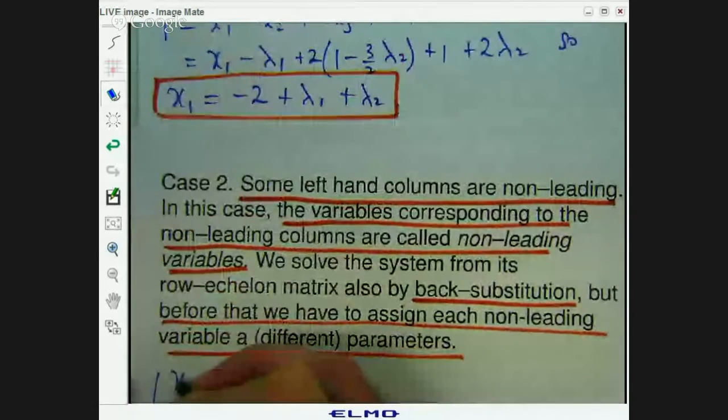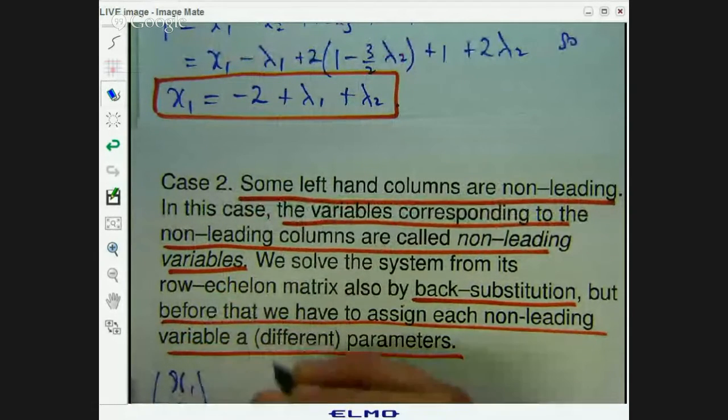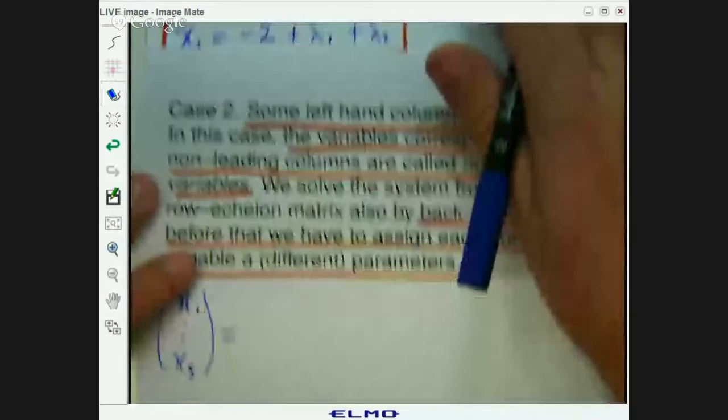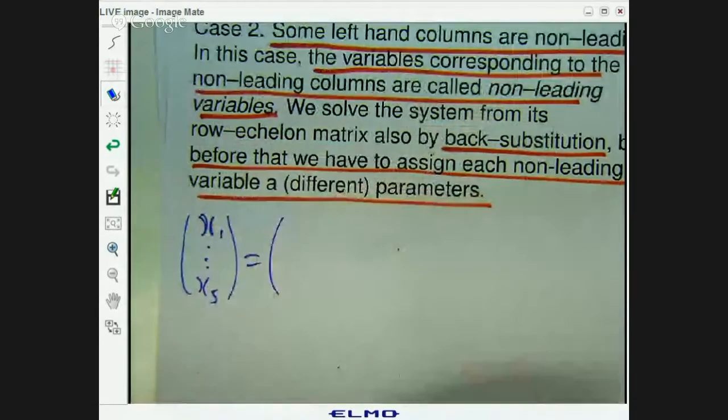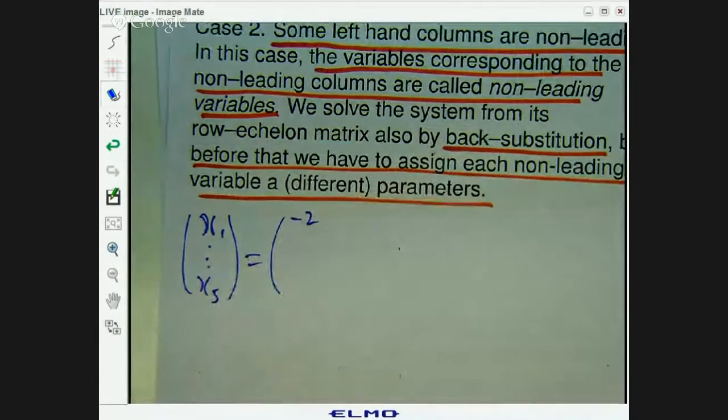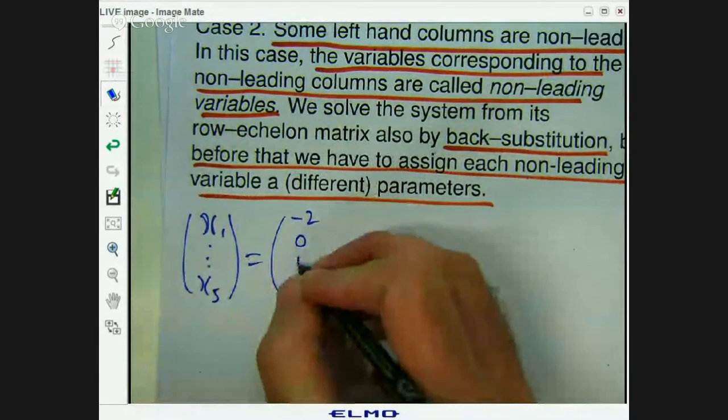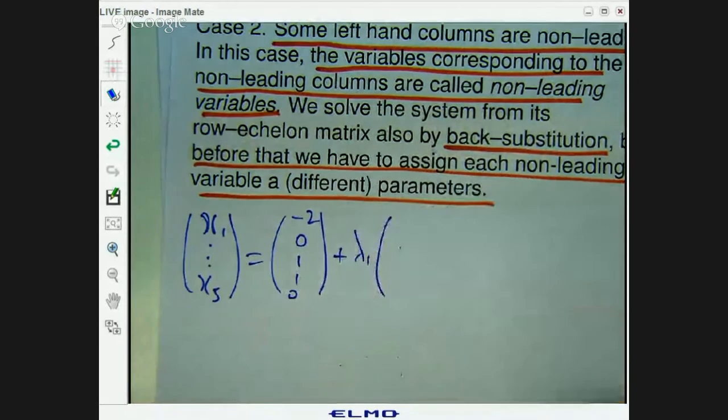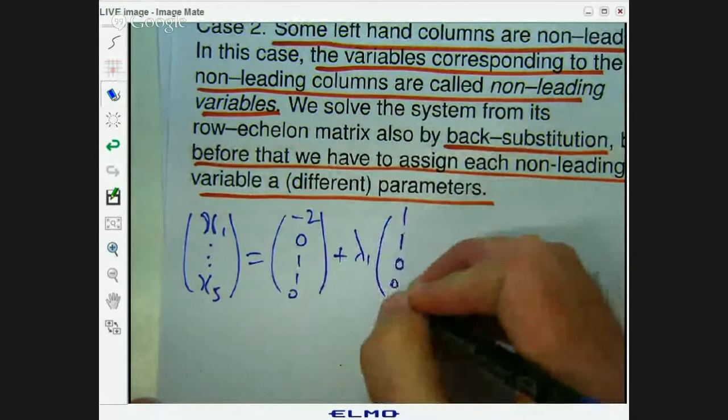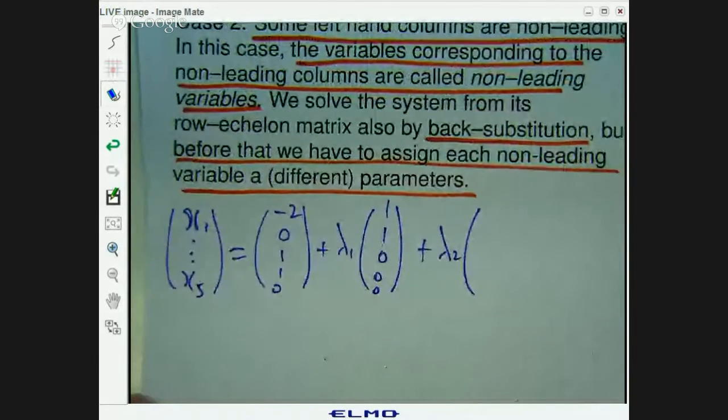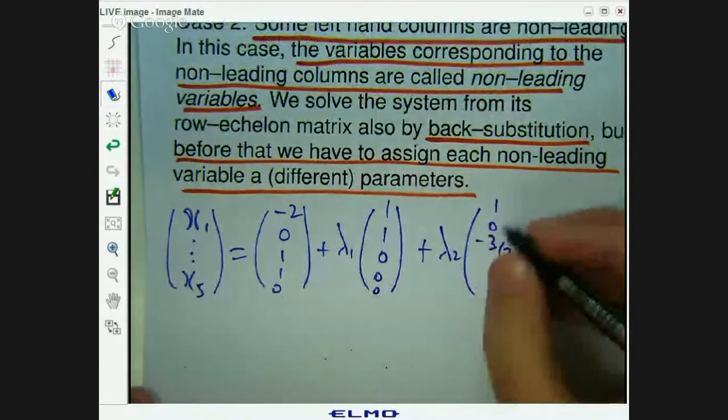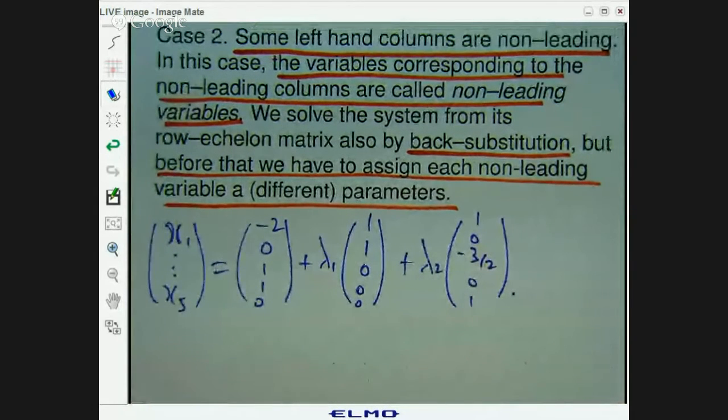Now if I wanted to write this solution out, say in a vector form, I could do it in the following way. So if I write this out like this, x1 through x5, just writing these as vectors now. So I take out the constant vector, factor out the lambda 1s and lambda 2s. So you might just want to check that I've written that down rather quickly.